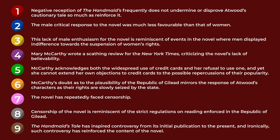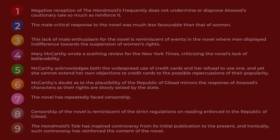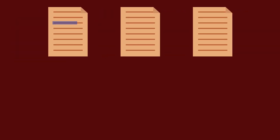Here is an example of a reverse outline. It is made up of the points of an essay on Margaret Atwood's novel, The Handmaid's Tale. For each paragraph in the essay, you should have a sentence or two to summarize the main idea. Once you have completed the sentences for each paragraph, you should have a condensed version of your essay.